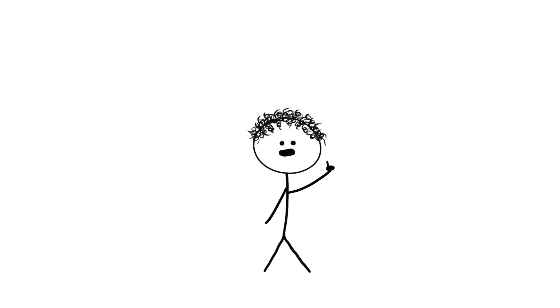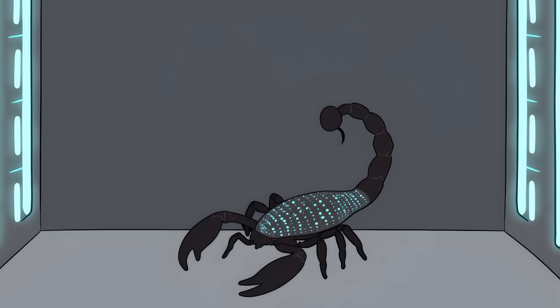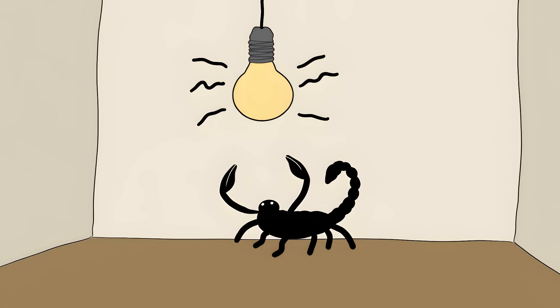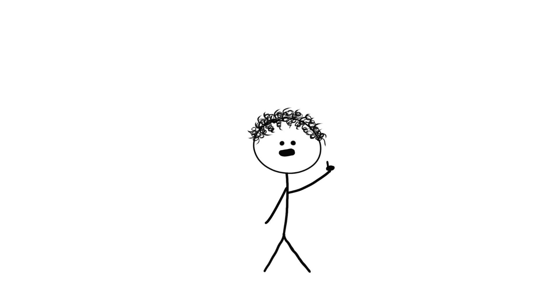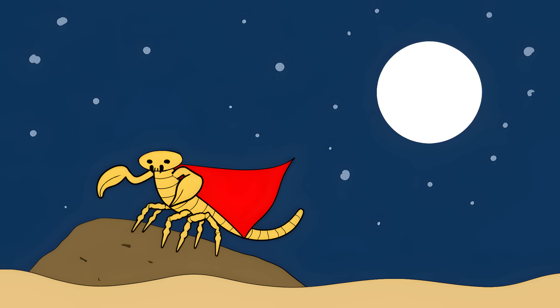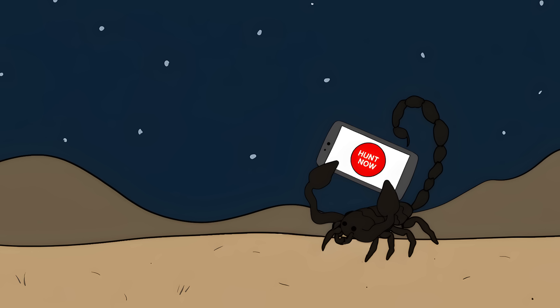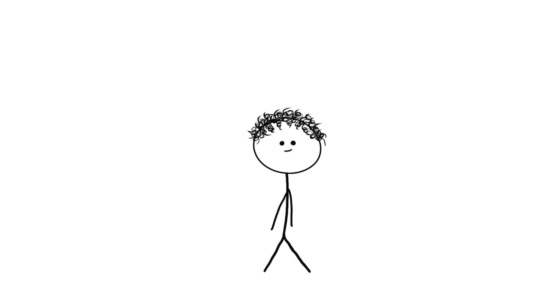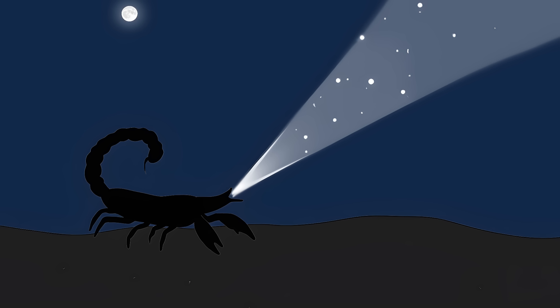Their entire exoskeleton is covered with something called the hyaline layer. They're basically wearing a full body suit made of billions of tiny light sensors. Every single part of their armor can detect changes in light, making them basically walking light detection machines. Scientists think they use this superpower to know exactly when the night is at its darkest. It's like having a built-in hunting app that tells them the perfect moment to strike. They're not just seeing their environment, they're feeling the actual light from stars millions of miles away on their skin.